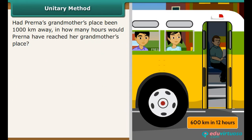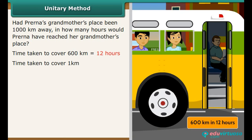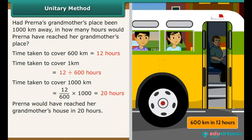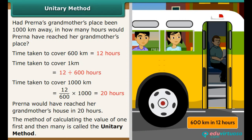If Prerna's grandmother's place were 1000 km away, how many hours would the journey take? Time taken to cover 600 km is 12 hours. Time to cover 1 km is 12 divided by 600 hours. Time to cover 1000 km is 12 divided by 600 multiplied by 1000, which equals 20 hours. Prerna would have reached her grandmother's house in 20 hours. The method of calculating the value of 1 first and then many is called the unitary method.